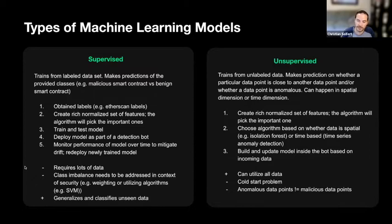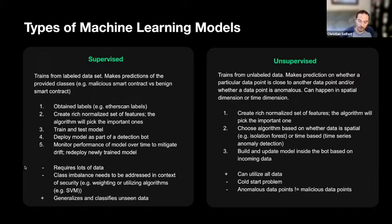If you cluster transactions into a set of clusters, and a new transaction comes in that doesn't get assigned to any of these clusters — it's kind of an outlier — you could say this is an anomalous transaction.